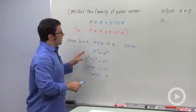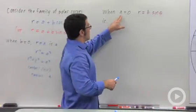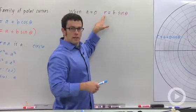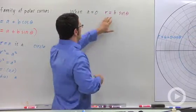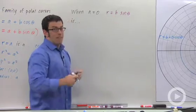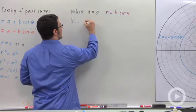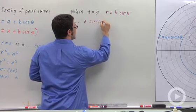Now what about the other simple case when a equals 0? Well if you get r equals b cosine theta or r equals b sine theta, I'll investigate this one. Its graph happens to also be a circle, and that's also pretty easy to show.